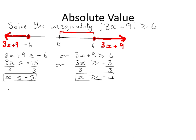Representing this on the number line: x is any number that is less than or equal to minus 5, so that is here, or x is any number that is greater than or equal to minus 1, so that is here.